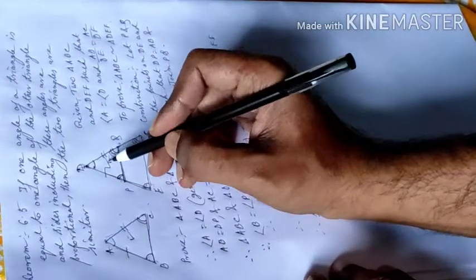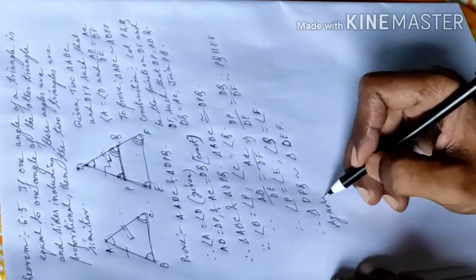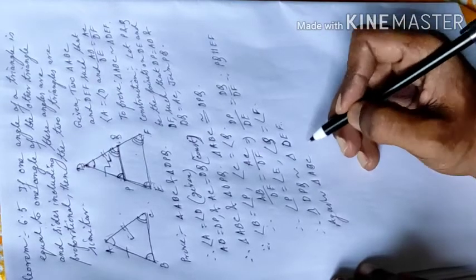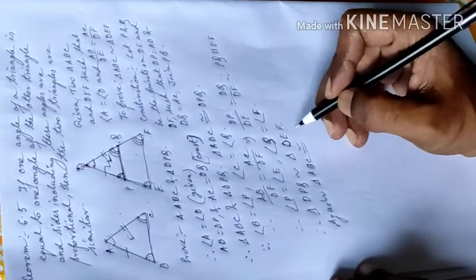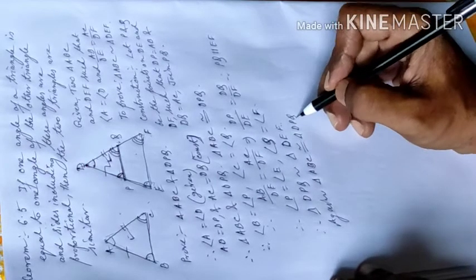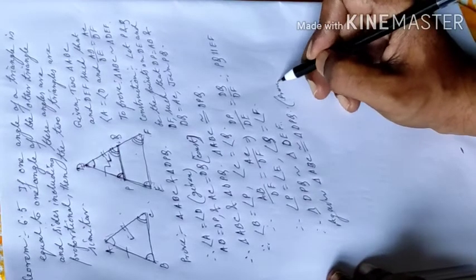Again, this triangle is congruent to this. Triangle ABC congruent triangle DPQ. Already proved.